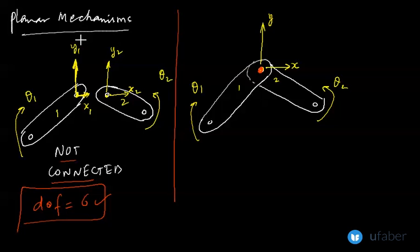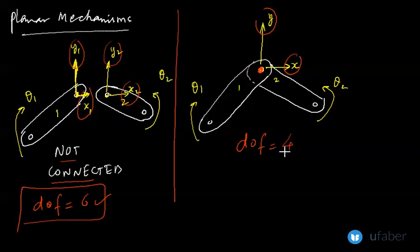So y1, y2, x1, x2, these four have become two degrees of freedom, so we have eliminated two. So now for this kind of a system, the degree of freedom becomes four.